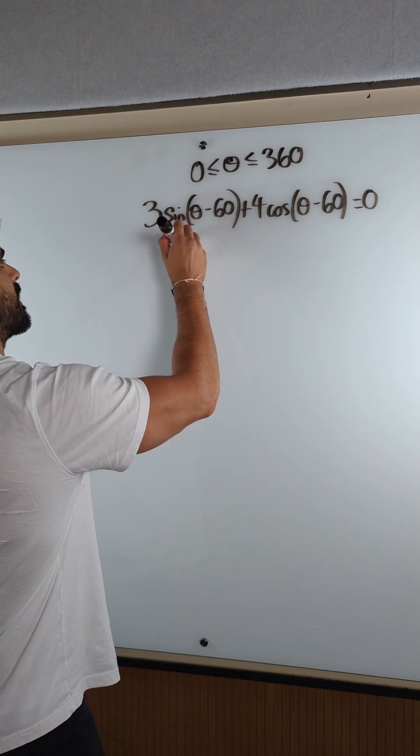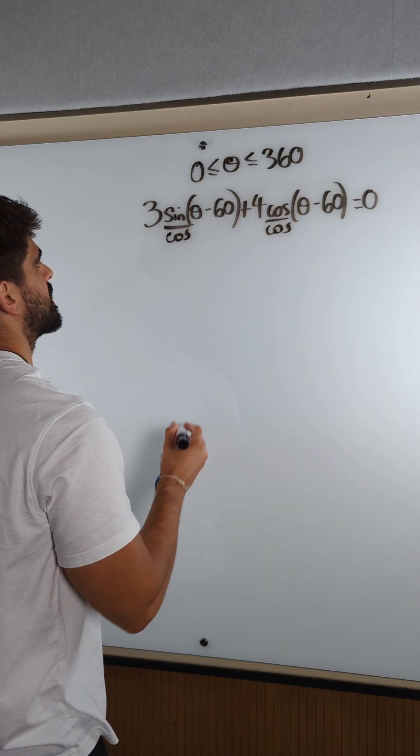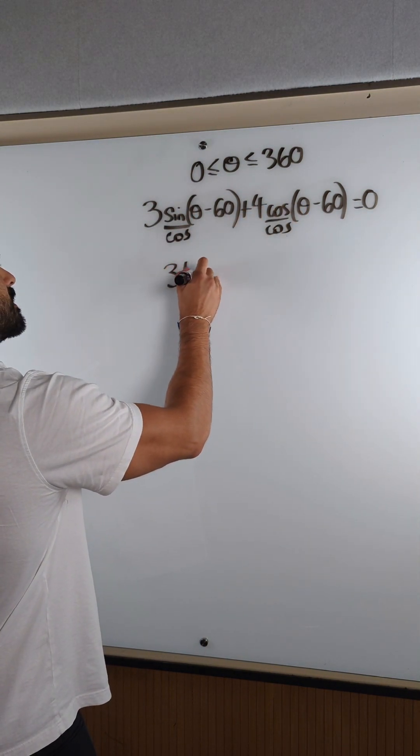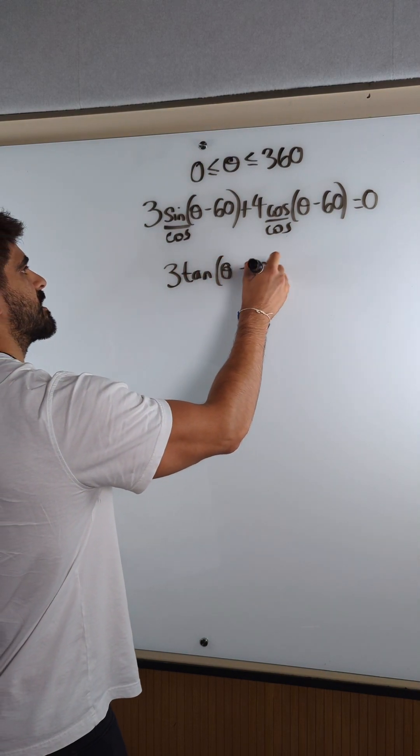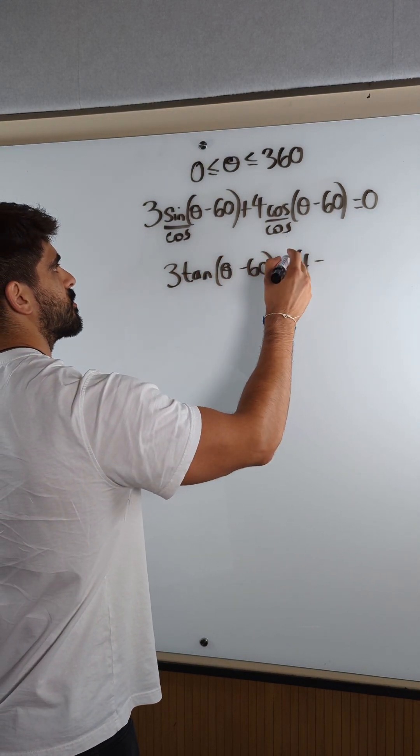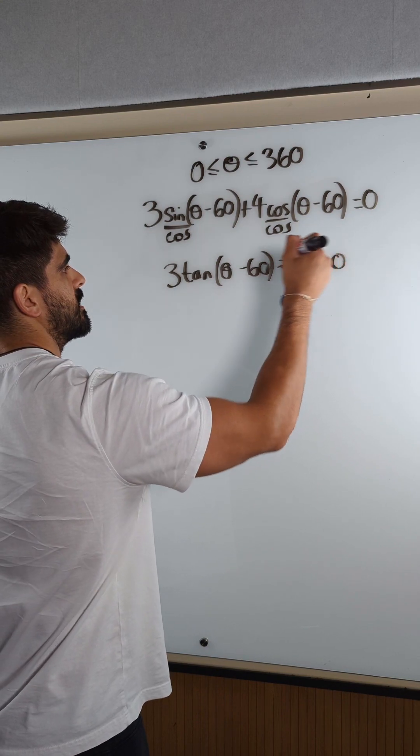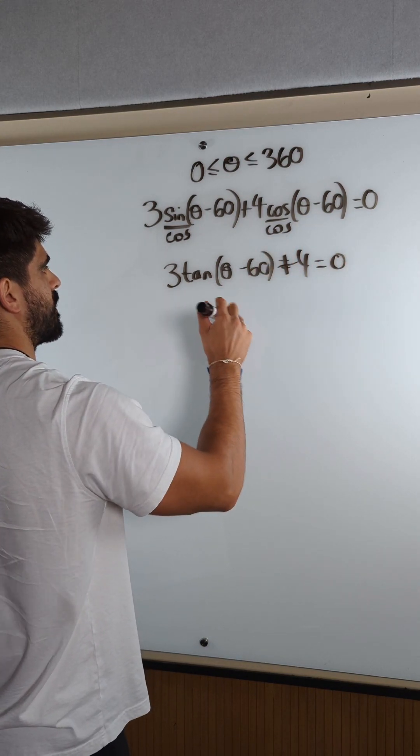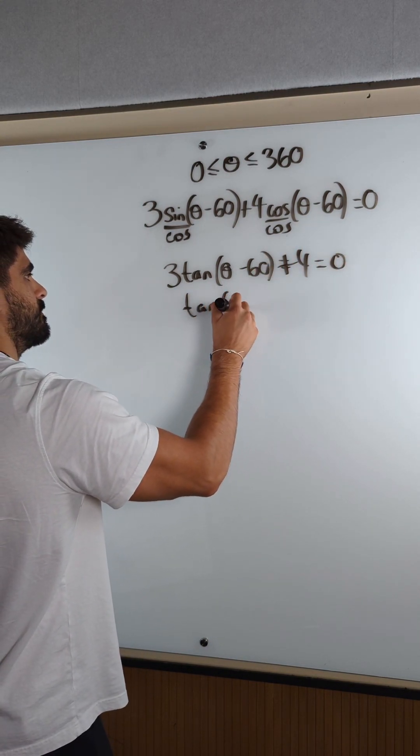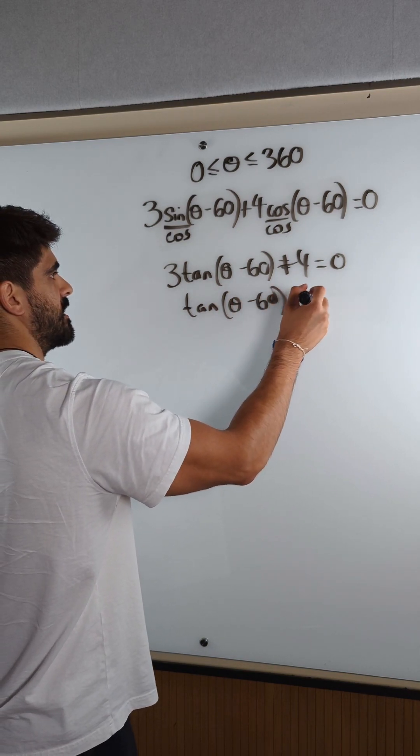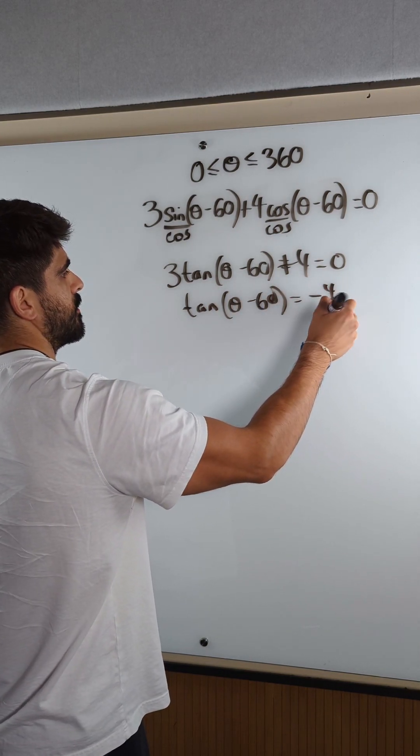And we do that by dividing through by cos of theta minus 60. So we get 3 tan theta minus 60 is 4, sorry, plus 4 is 0. Move the 4 over and divide by 3, we'll get tan is minus 4 over 3.